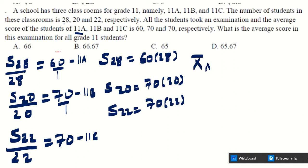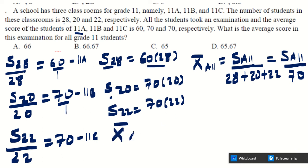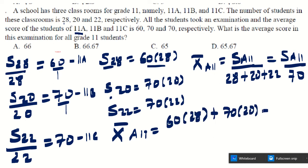Rewrite 60 × 28: since 60 = 10 × 6 and 28 = 7 × 4, we get 10 × 7 × 6 × 4 = 70 × 24. So the numerator becomes 70×24 + 70×20 + 70×22. Factor out 70: 70 × (24 + 20 + 22) / 70.